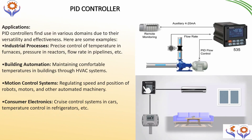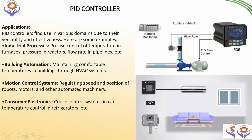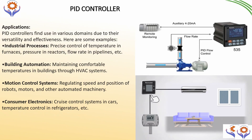Temperature controls in refrigerators, houses for ACs, etc. You can see some examples here. In the first example, the PLC is connected with the PID controller, and the PID controller is connected with the pump and the flow transmitter. In the second example, the AC is connected with a thermostat and temperature sensors. As per the set points, the process value will change, and the PID controller will work on the temperature sensors in the houses and BMS systems.